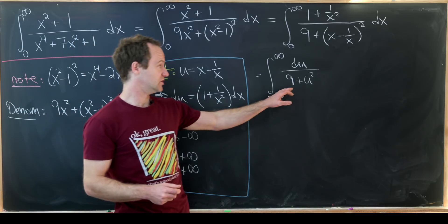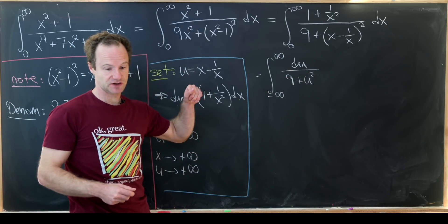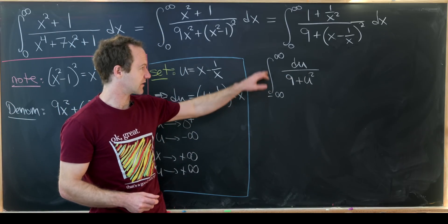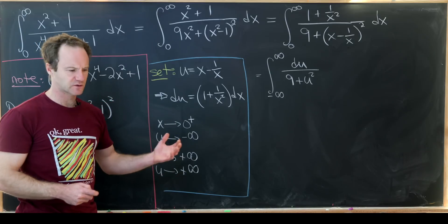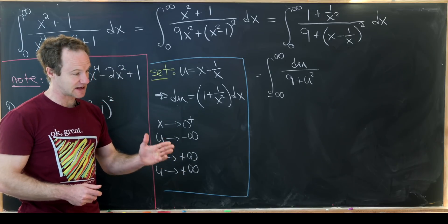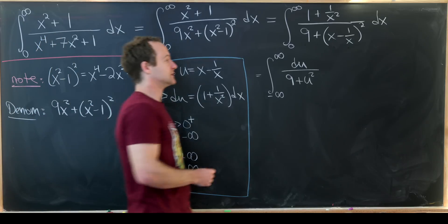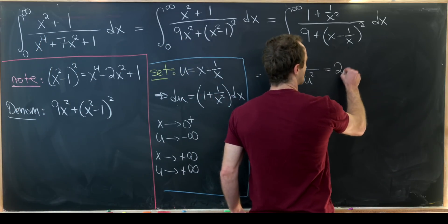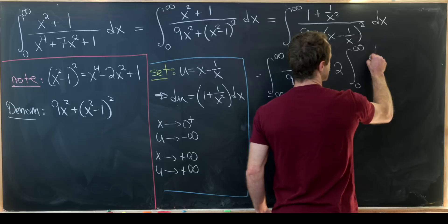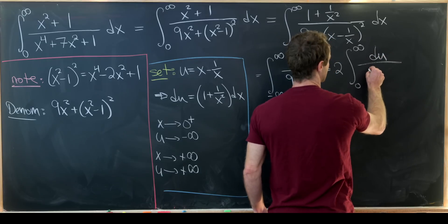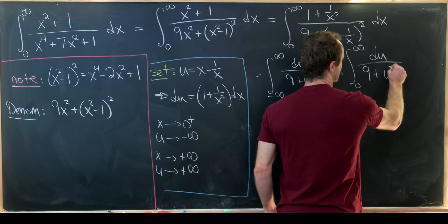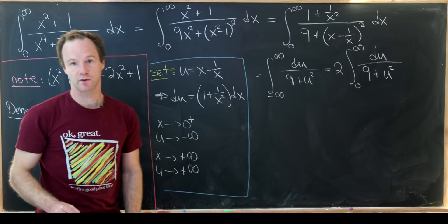Let's first note that this is an even function and we're integrating over a symmetric domain—in other words, a domain that's split evenly by the origin. That means I can write this as twice the integral from 0 to infinity of du over 9 plus u squared.